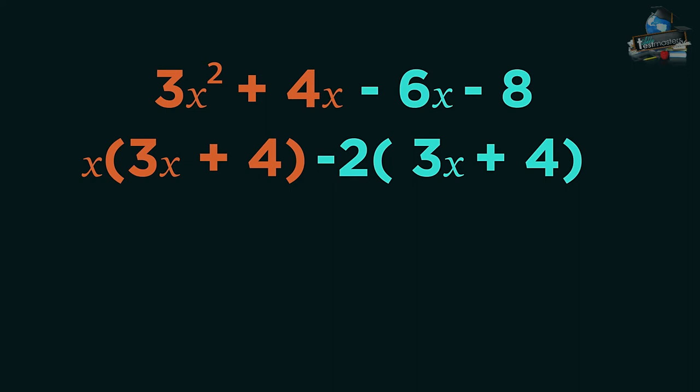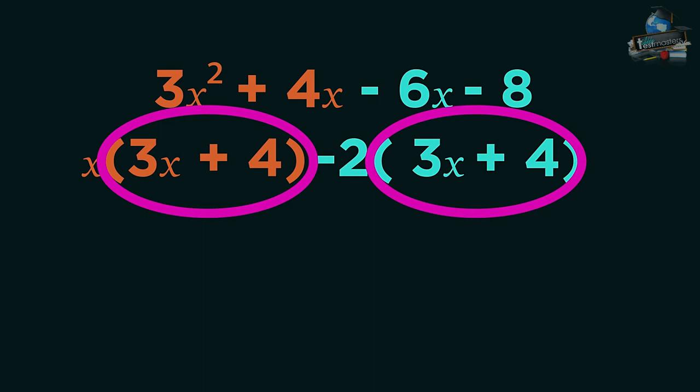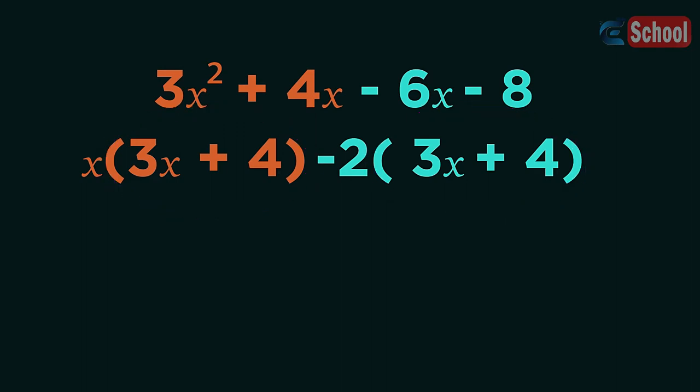These brackets must be identical. If they aren't, go back and check you haven't made any mistakes so far. Nearly there. Just put these two terms into one bracket. And the 3x minus 4 as the other bracket.